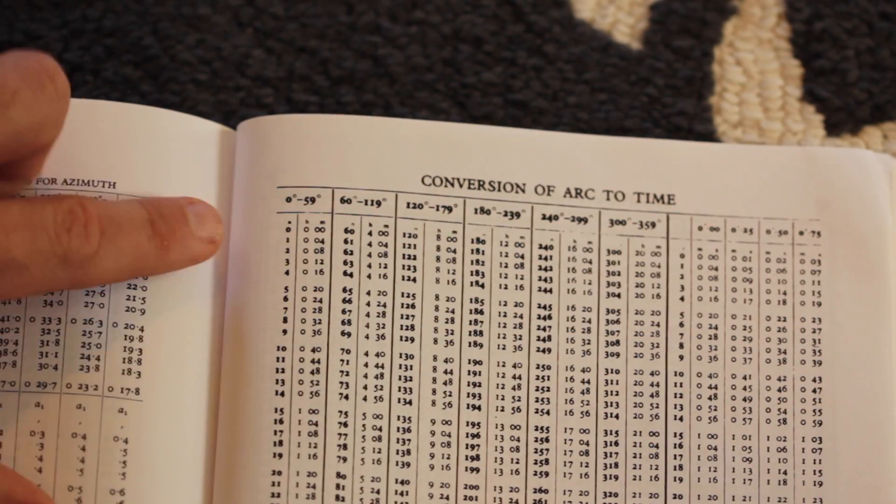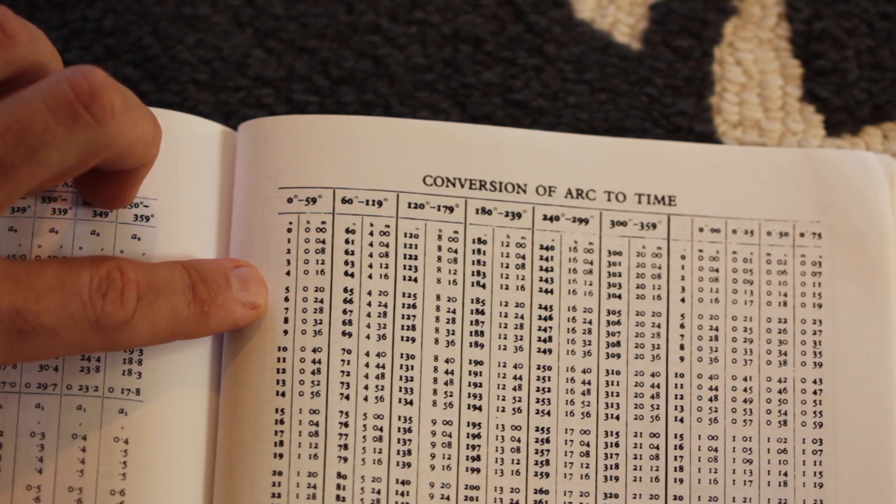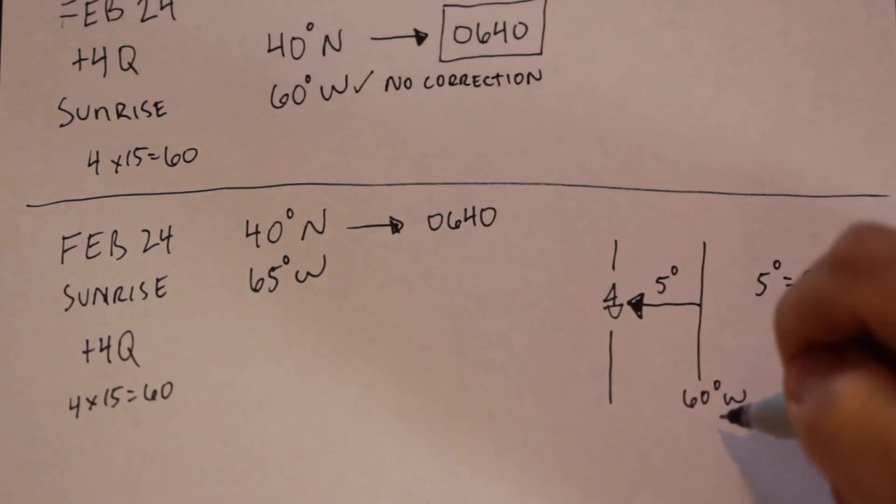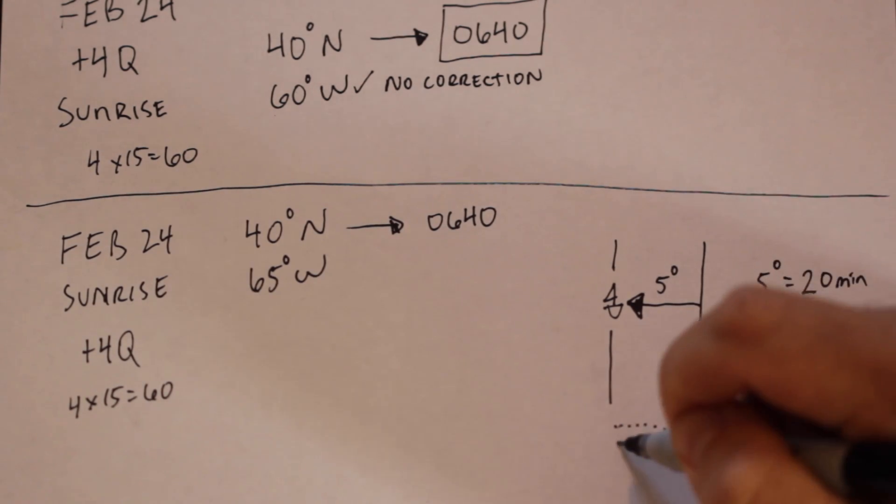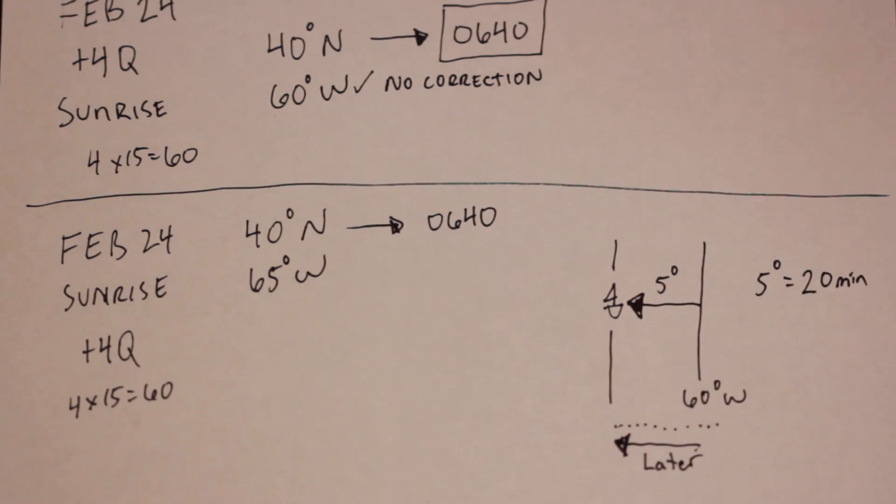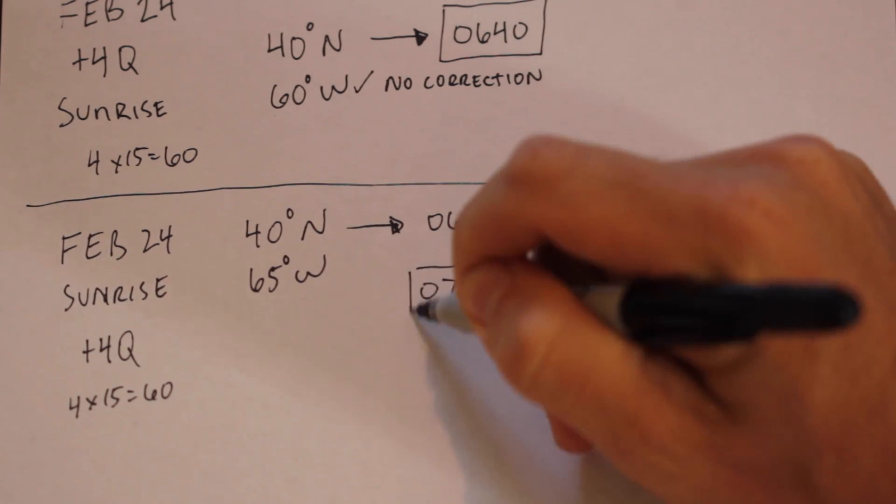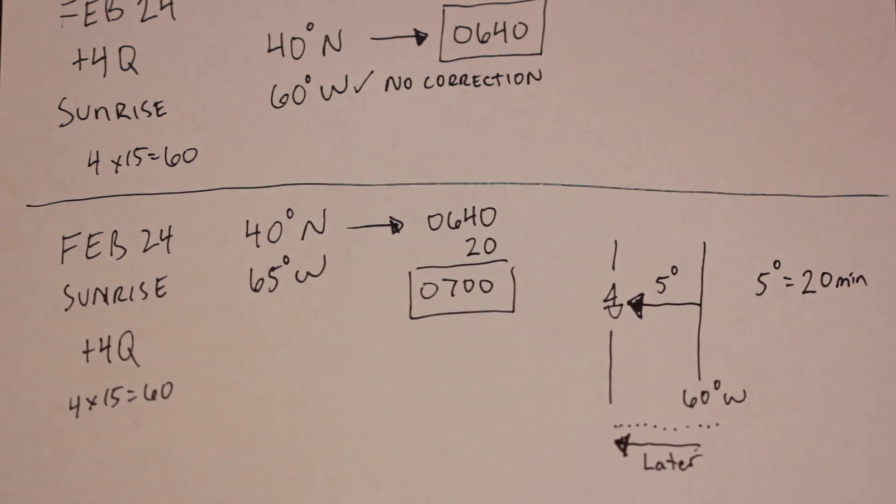Convert arc, or 5 degrees, into time. The table tells us that 5 degrees is equal to 20 minutes of time. The sun takes 20 minutes to travel 5 degrees over the Earth's surface. Since we are to the west of the standard meridian we are observing, the sun will rise later for us. 20 minutes later, to be exact. So the final time of sunrise is 0700.